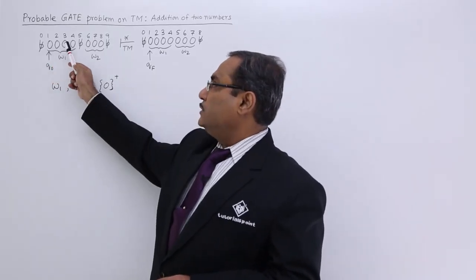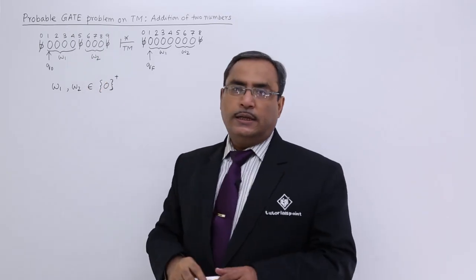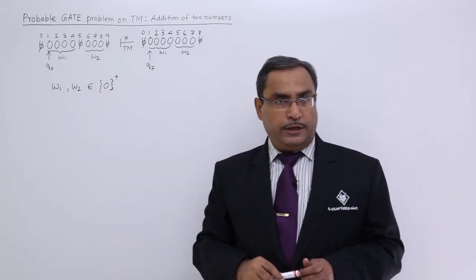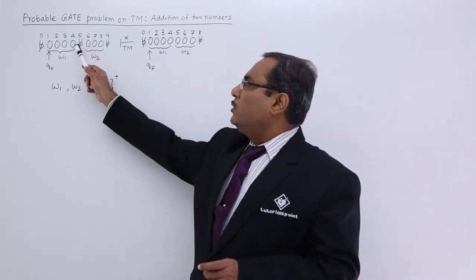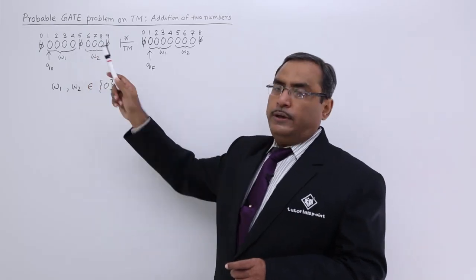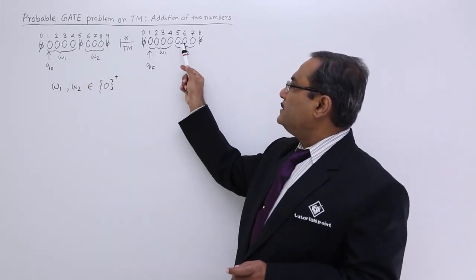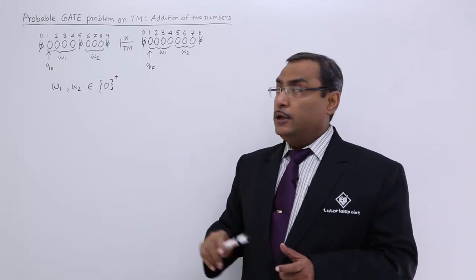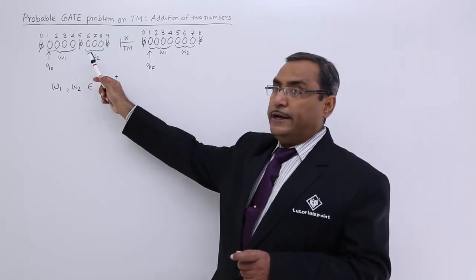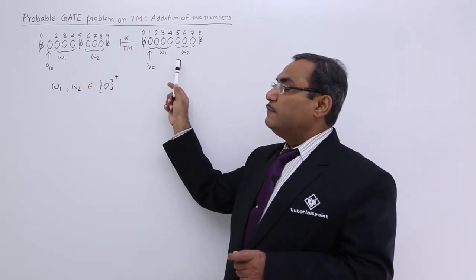Here the count is 4, so the number is 4. Here the count is 3, so the number is 3, and we shall concatenate them to get the sum as 7. So I shall be having seven zeros in this way. So that is my initial ID and that is my final ID.